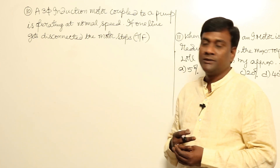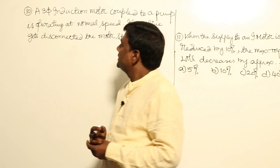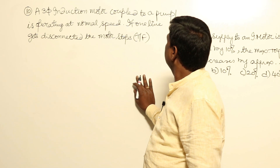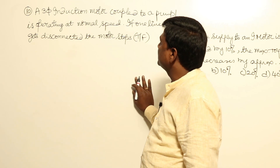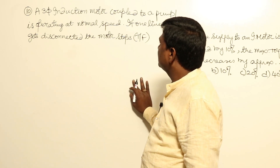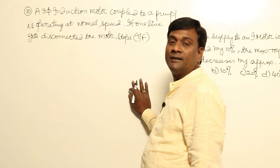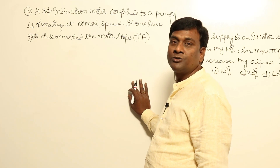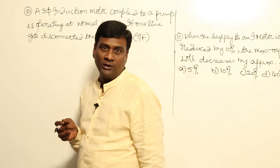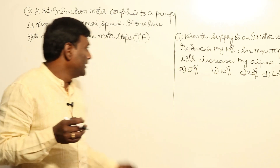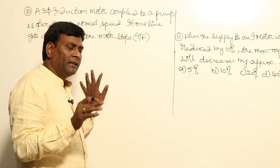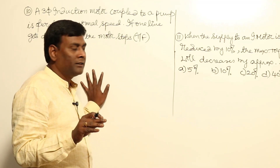Let us see some more problems in this session. A three-phase induction motor coupled to a pump is operating at normal speed. If one line gets disconnected, the motor stops — we have to say now whether this is true or false. Many students will be confused between this and the open delta connection of a transformer.